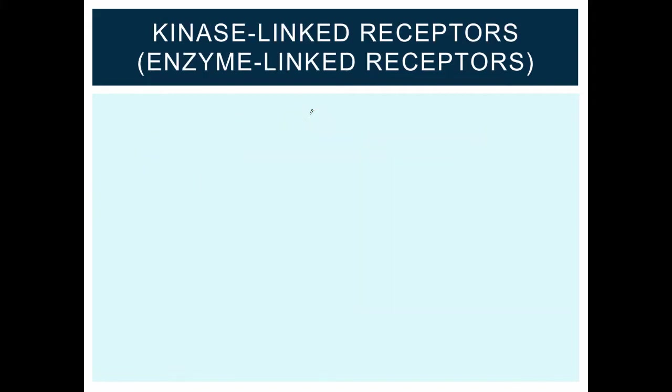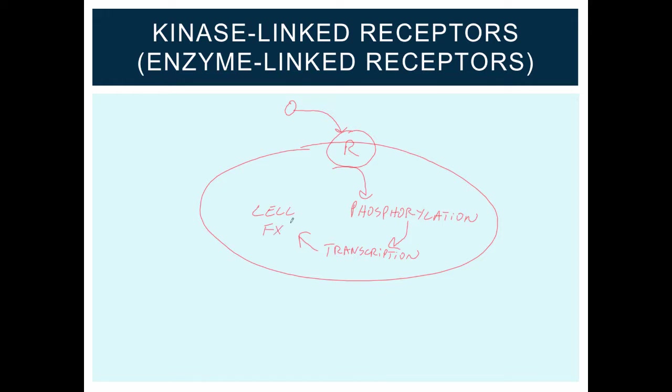The next type of receptor I want to look at are the kinase-linked receptors, also known as enzyme-linked receptors. So if we draw a picture of a cell, we can place the receptor here in the middle again. Upon binding the ligand, this receptor is able to phosphorylate targets inside the cell, initiating cell signaling events. These can ultimately cause changes in transcription and translation, which lead to changes in cellular behavior and cellular effects.